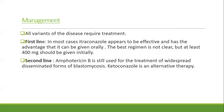All variants of blastomycosis require treatment. First-line treatment in most cases is itraconazole, which has the advantage of oral administration; at least 400 mg should be given initially. Second-line treatment is amphotericin B, still used for widespread disseminated forms. Ketoconazole is an alternate.